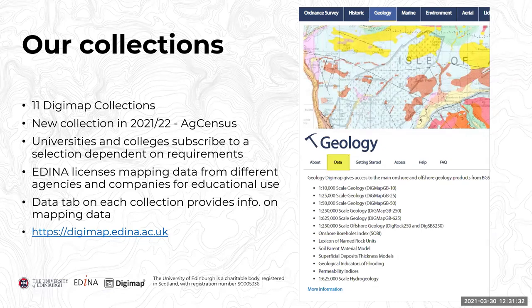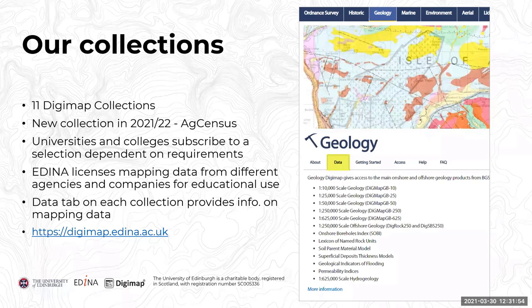Our role at EDINA at the University of Edinburgh is that we license the maps and mapping data from different agencies and companies for educational use. So your use of the maps and data is primarily for educational use. There are some exceptions — we do have some open data within the collections as well, which we'll talk about more later.